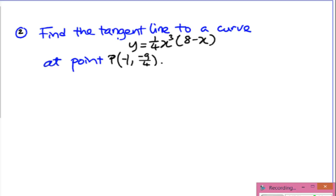In order to find the equation of the tangent line, we use a similar process as before. That is, we want to find y minus y0 equal to m times x minus x0.